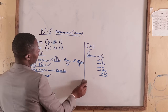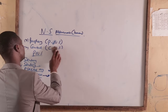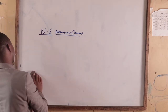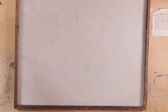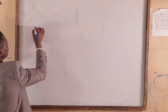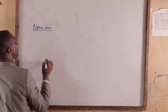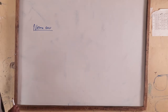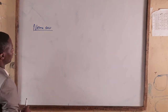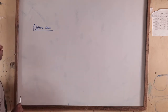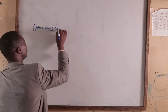For today, I want us to look at the structure and functions of the nerve cells. The nerve cells are the cells that coordinate the sensory organs, the central nervous system, and the effector organs. We also call them neurons.